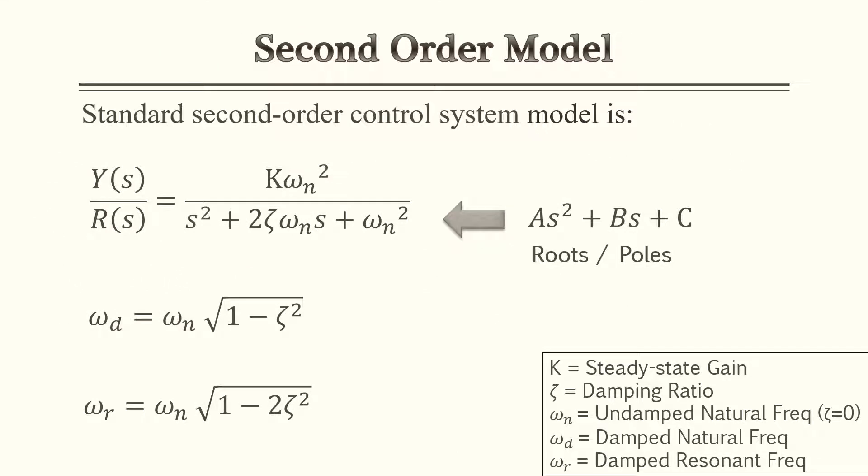A common model seen in control systems is your second order model. The first equation shown here, taken from the FE handbook, displays the second order model. It shows the numerator with your steady state gain and your undamped natural frequency, as well as your roots or poles in the denominator, along with your damping ratio.